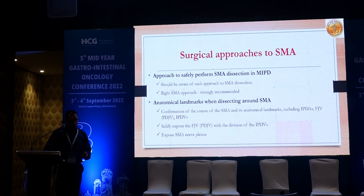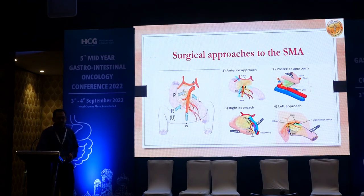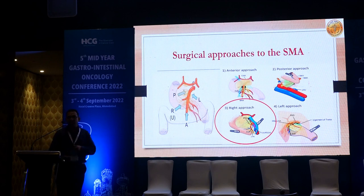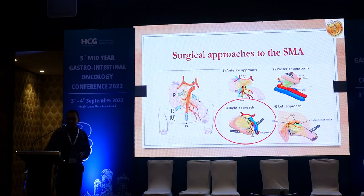There are various approaches in MIPD: anterior approach, posterior approach, right approach, and left approach. Predominantly the right approach is most commonly used, in which you give traction on the duodenum on the right side and the portal vein on the left side, so that you can make a way along the SMA for clear dissection.